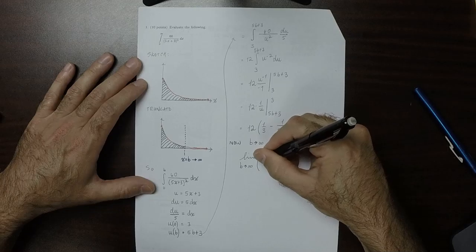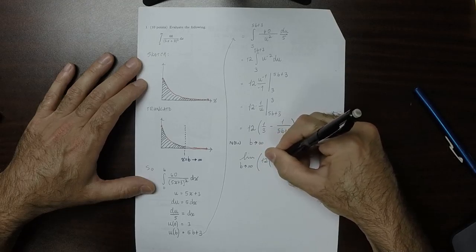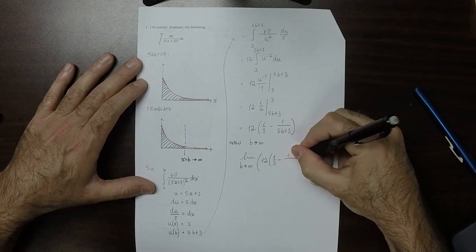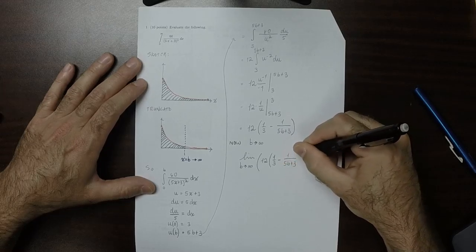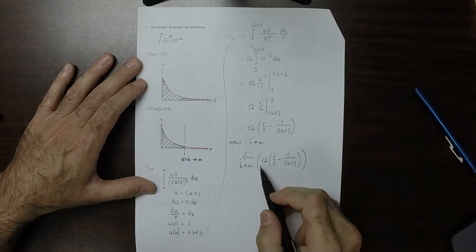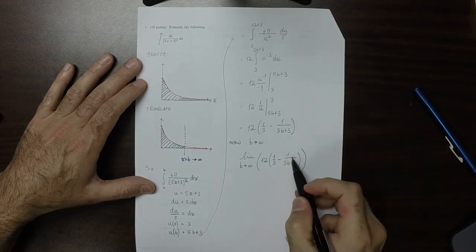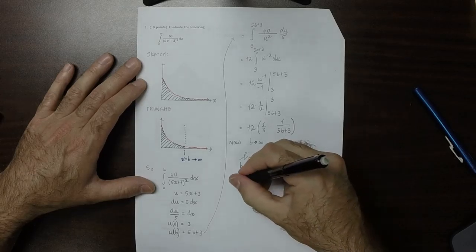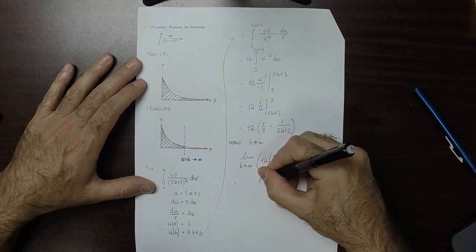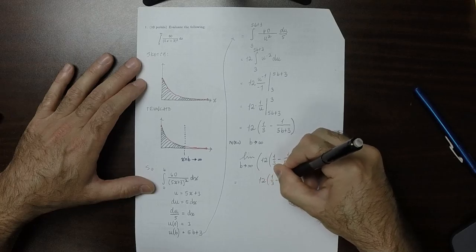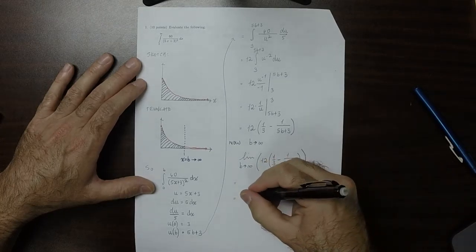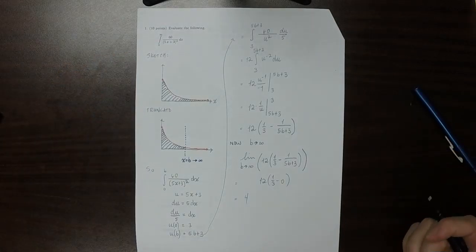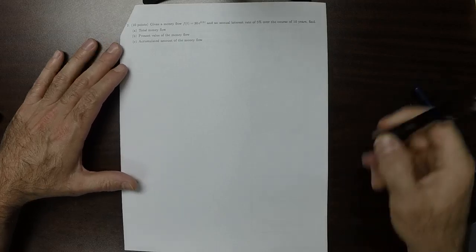Now we let b go to infinity. The limit as b → ∞ of 12 times (1/3 − 1/(5b + 3)): the 12 stays as 12, 1/3 stays as 1/3, and since 5b + 3 goes to infinity, 1/(5b + 3) goes to 0. So this is 12 times (1/3 − 0), which equals 4. That's the answer to exercise 1.